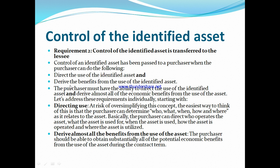The direct use of the identifiable asset drives the benefits from the use of the identifiable asset. If you identify the asset directly, you need to be able to control it. The purchaser can determine who, what, when, how, and where the asset is used. Basically, the purchaser can direct who operates the asset.